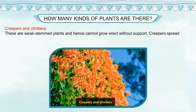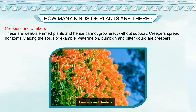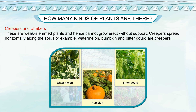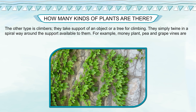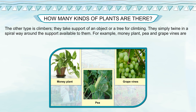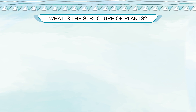Creepers and climbers: these are weak stem plants and hence cannot grow erect without support. Creepers spread horizontally along the soil. For example, watermelon, pumpkin and bitter gourd are creepers. The other type is climbers. They take support of an object or a tree for climbing and twine in a spiral way around the support. For example, money plant, pea and grapevines are climbers.